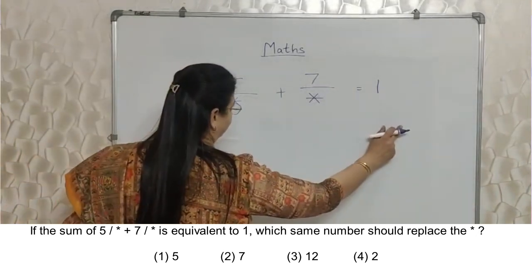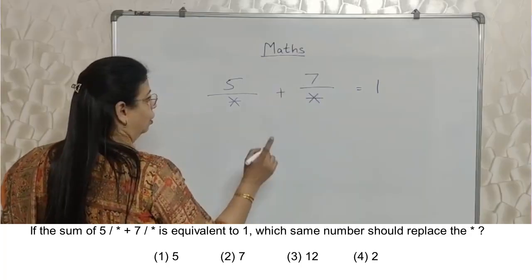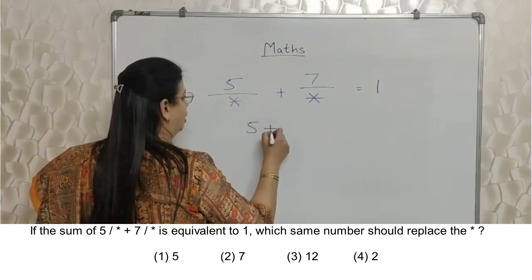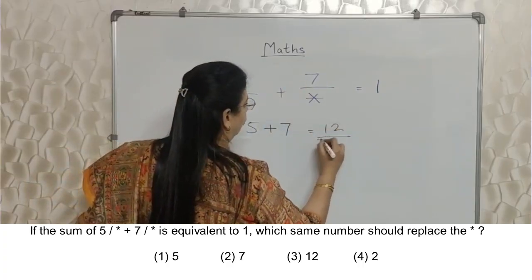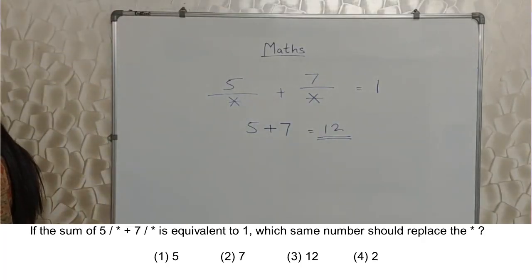So here again, shortcut. This kind of sum appears like first standard addition. Add the numbers on top: 12. 12 is the answer. Now tell me, is it difficult?